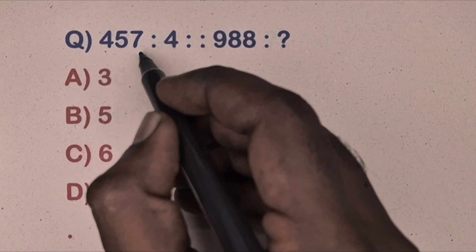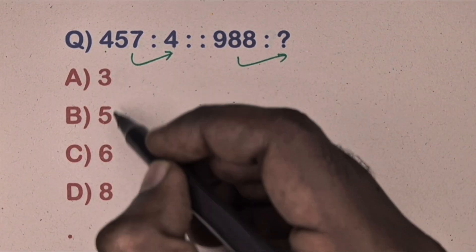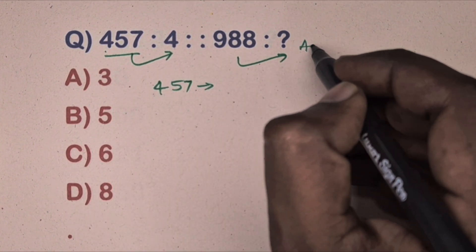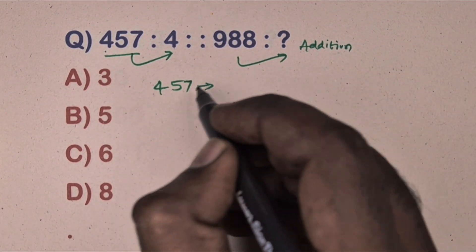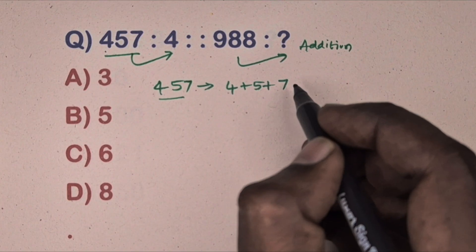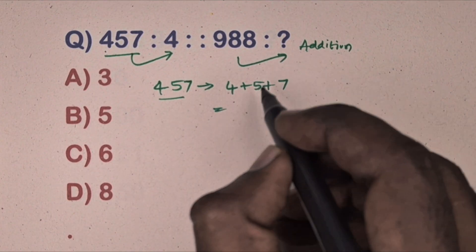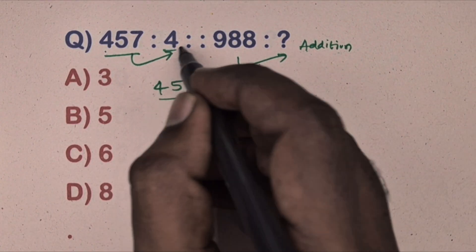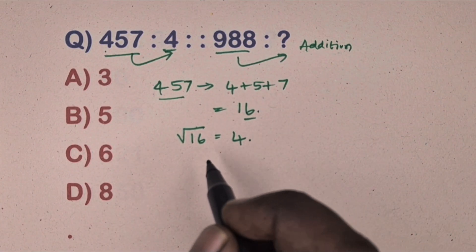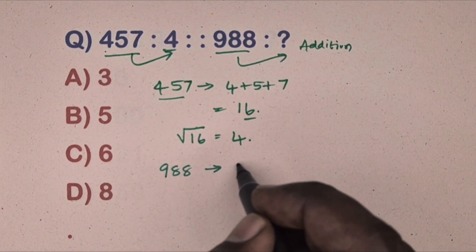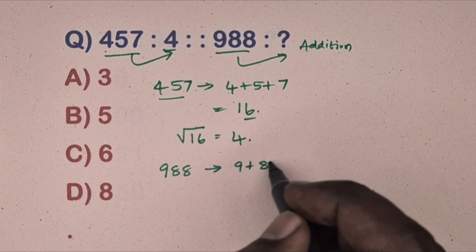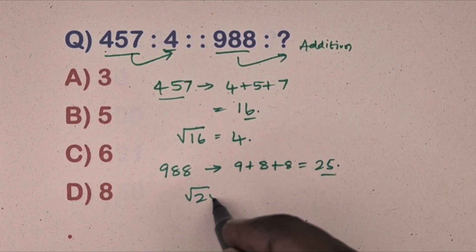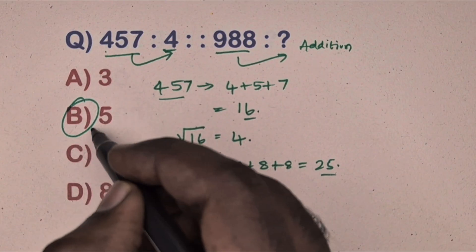Next question: 457 is related to four, 988 is related to which number? Options are given. This is the addition method — add the digits of 457: four plus five plus seven equals 16, then square root of 16 equals four. Same way, take 988: add digits nine plus eight plus eight equals 25, square root of 25 equals five. Option B is the correct answer.